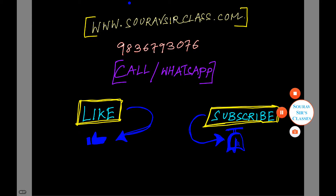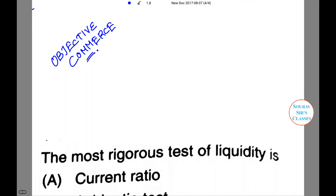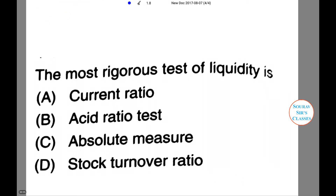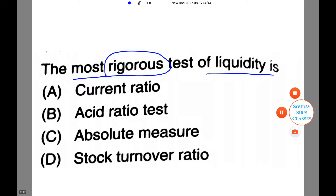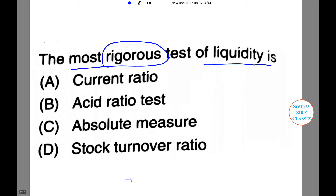Today our topic is objective commerce. Here is our first question: the most rigorous test of liquidity is — with four options given. Option A is current ratio, option B is acid test ratio, option C is absolute measure, and option D is stock turnover ratio.